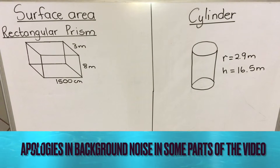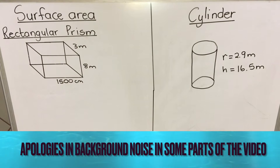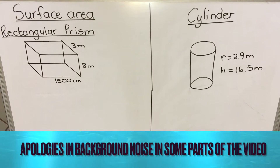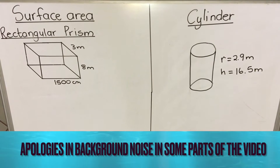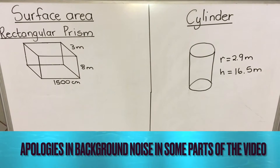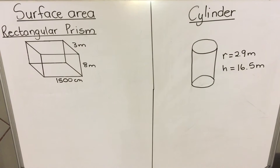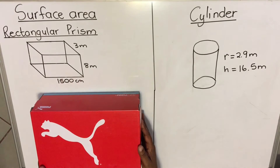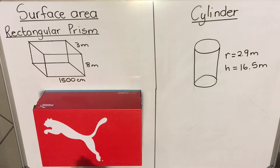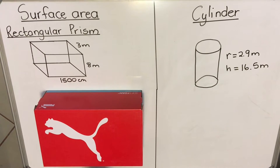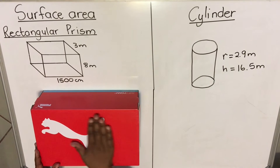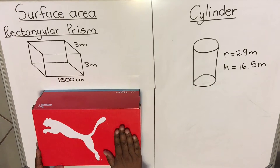Hello everyone, this is a lesson on surface area. We're going to look at two shapes: a rectangular prism and a cylinder. Before we start, I want to explain what surface area is. Number one, it's a three-dimensional shape — something like this box that you can hold. It's not two-dimensional like a rectangle, triangle, or square. Surface area is the outside part of the three-dimensional shape.